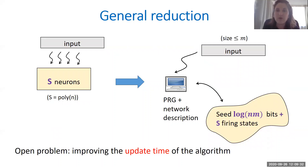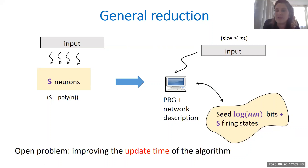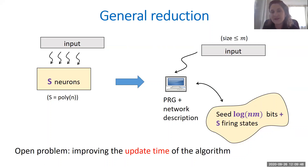Given a neural network with S non-input neurons, we can simulate it as a streaming algorithm where we store logarithmically many random bits as a seed, plus the firing states of the non-input neurons in each round using S bits. We then simulate the network's behavior by extracting the edge weights using the pseudorandom generator, and determine the firing states of the neurons in each round using the previous stored firing states plus the network description. While this reduction is nearly optimal in terms of space complexity, the update time of the streaming algorithm can be very large, because we don't know how to find such a pseudorandom generator efficiently. Improving the update time of the streaming algorithm remains open, and it can also be interesting to study the trade-off between space complexity and time complexity.